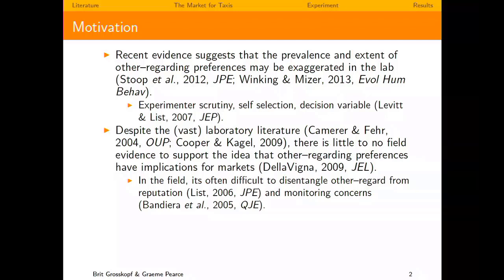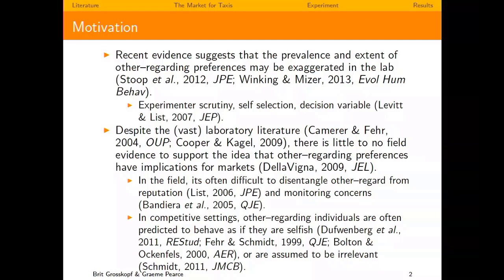A big proponent behind this is John List, who has done excellent work showing there are a lot of reputational concerns out there. The other thing is monitoring concerns. And for those more theoretically inclined, even if you build a model where agents take into account other people's payoffs, the predictions might show agents behaving very much like selfish agents — the outcome might be indistinguishable from purely selfish behavior.